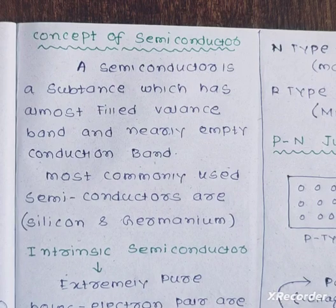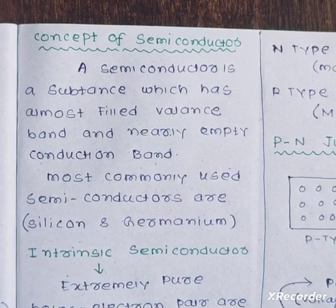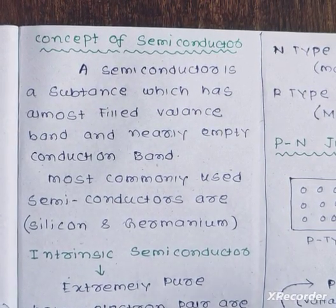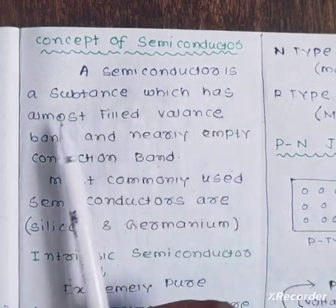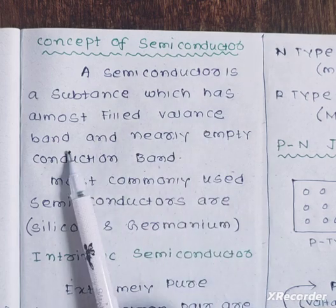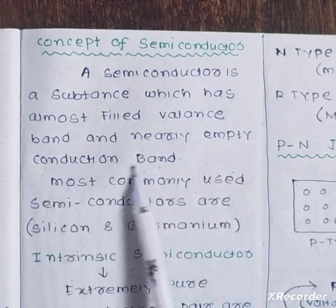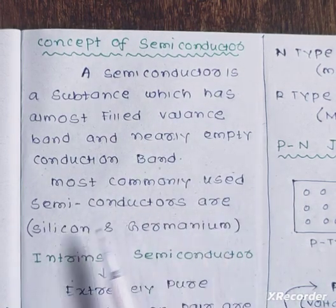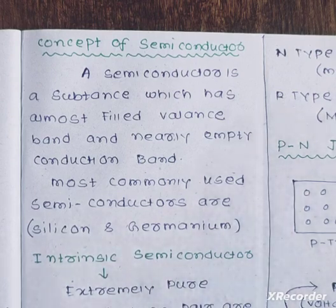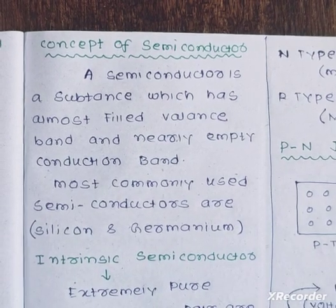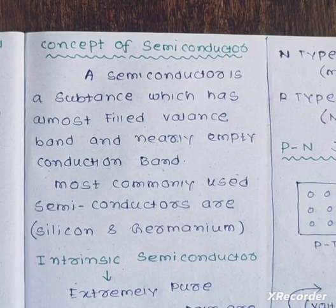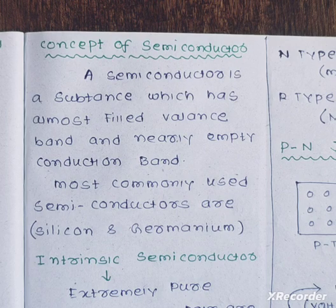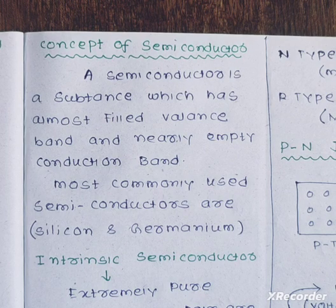In the study of electronics, the semiconductor is very important, and we will learn more details about it. A semiconductor is a substance which has an almost filled valence band and a nearly empty conduction band.